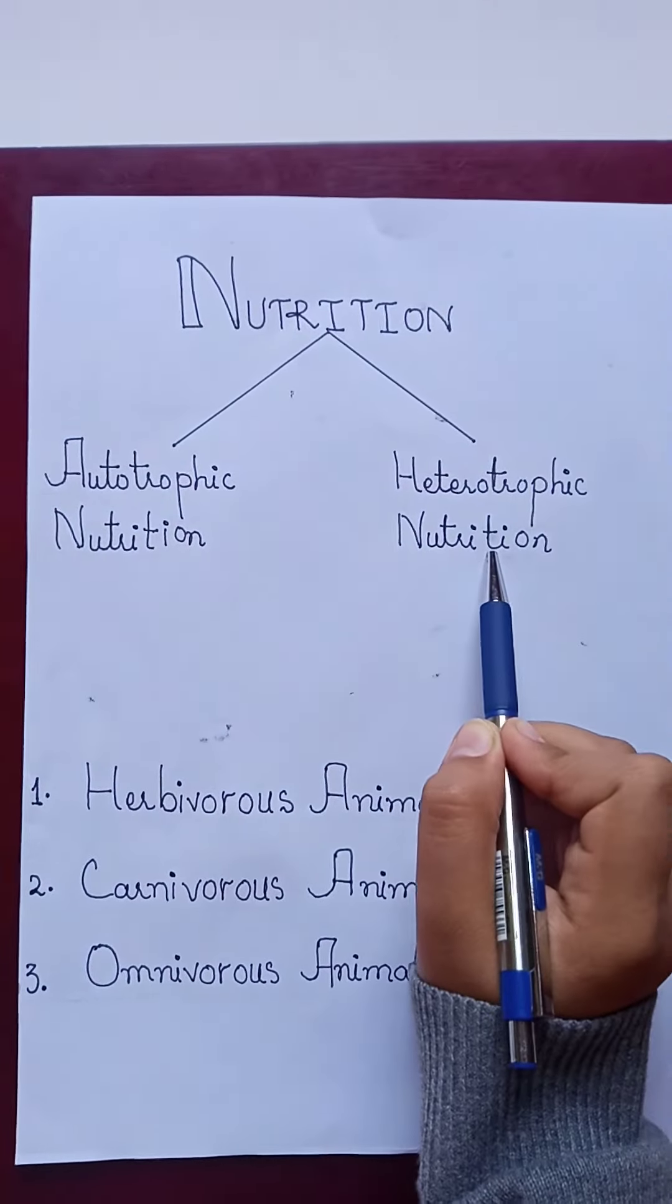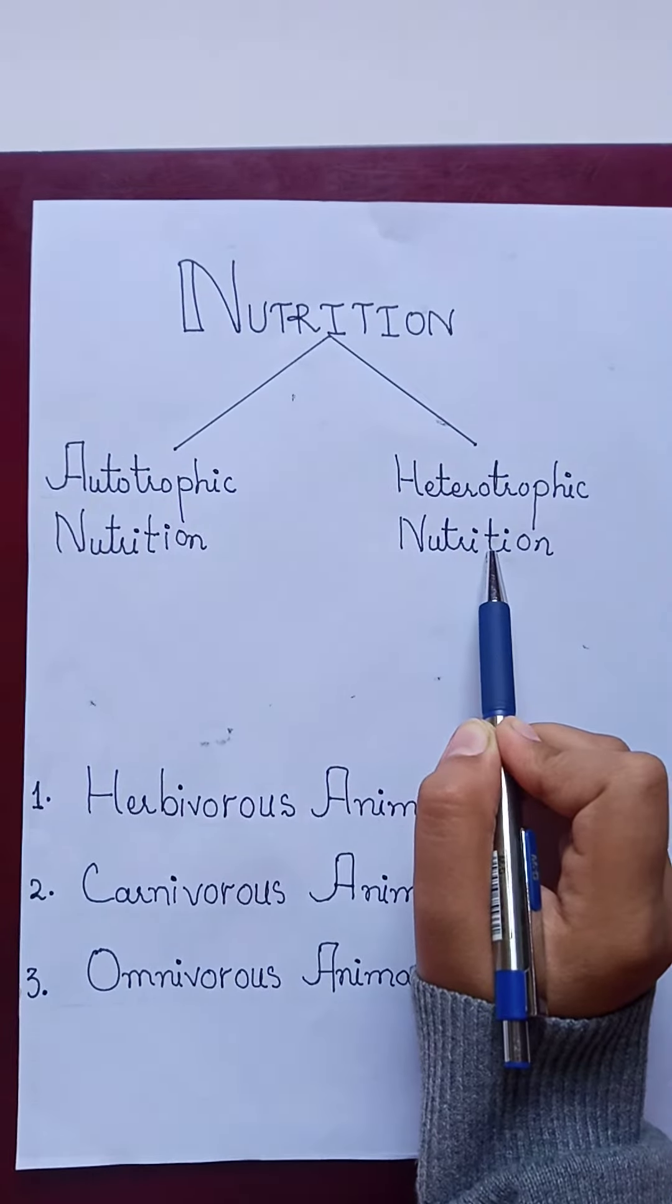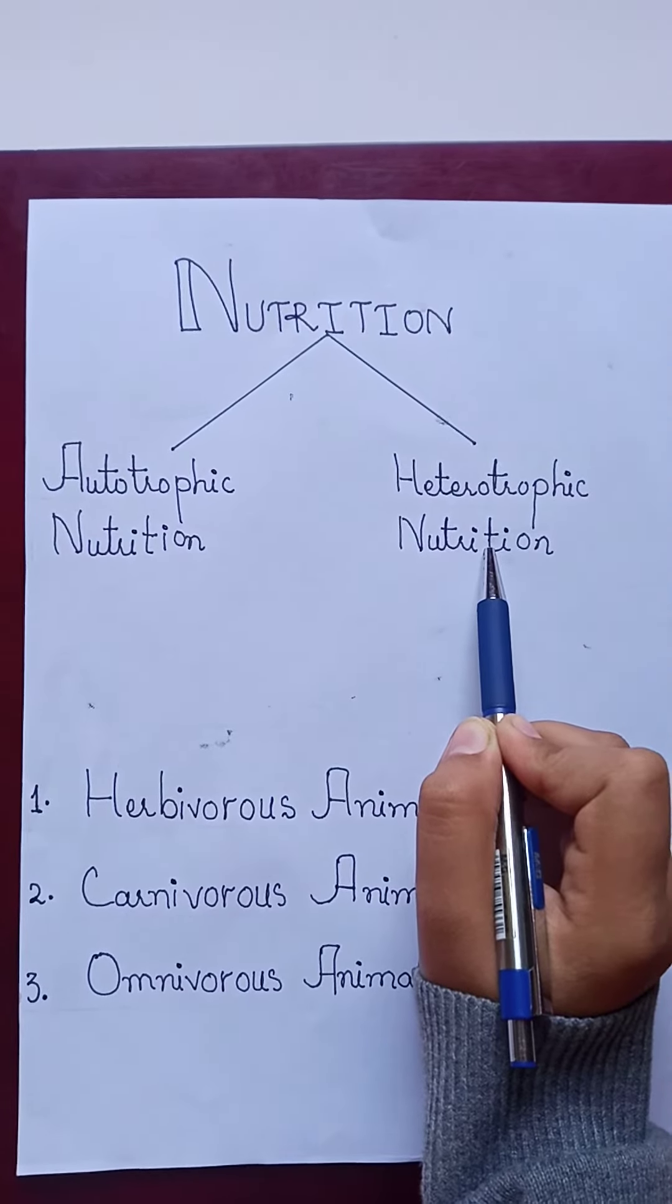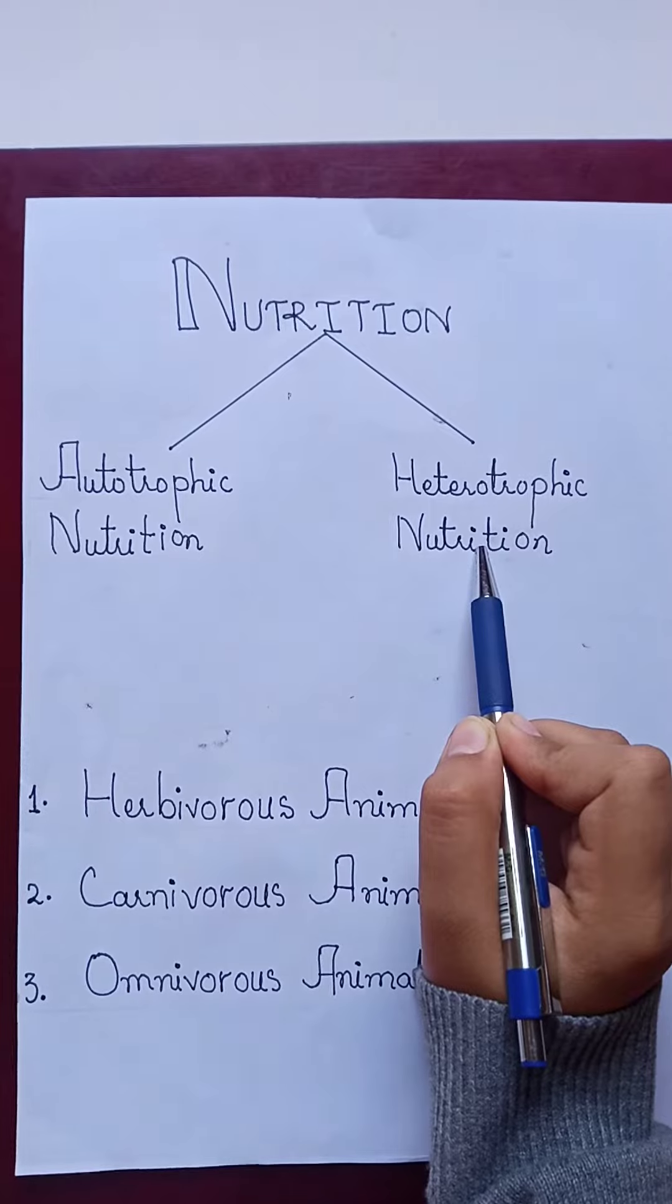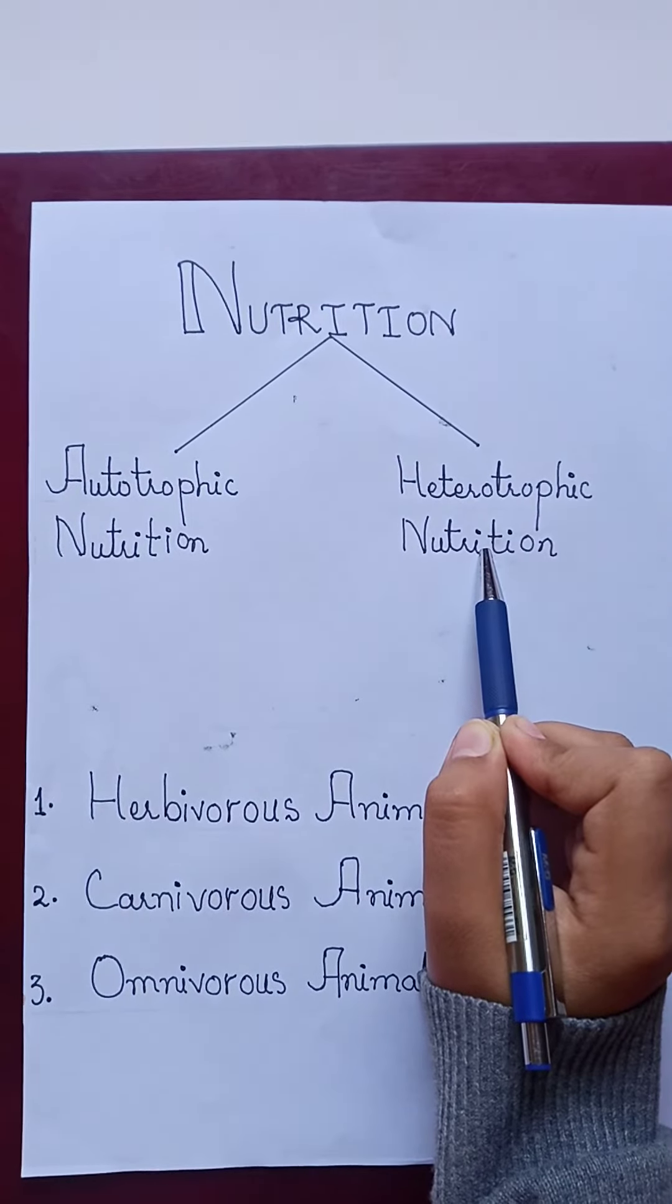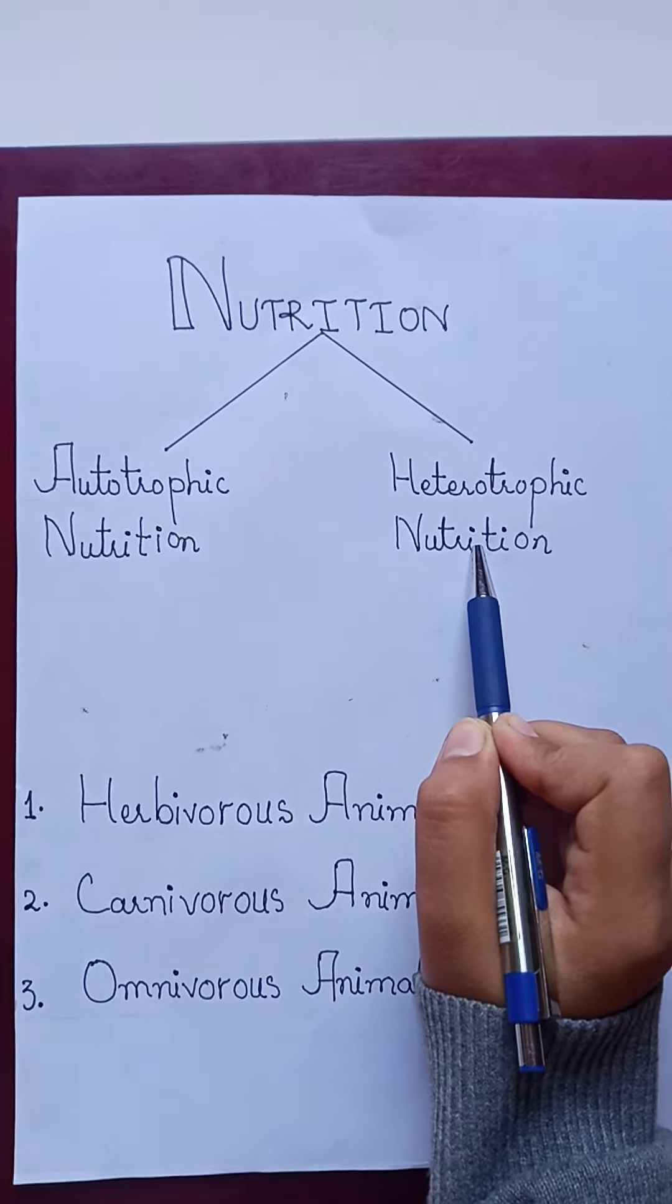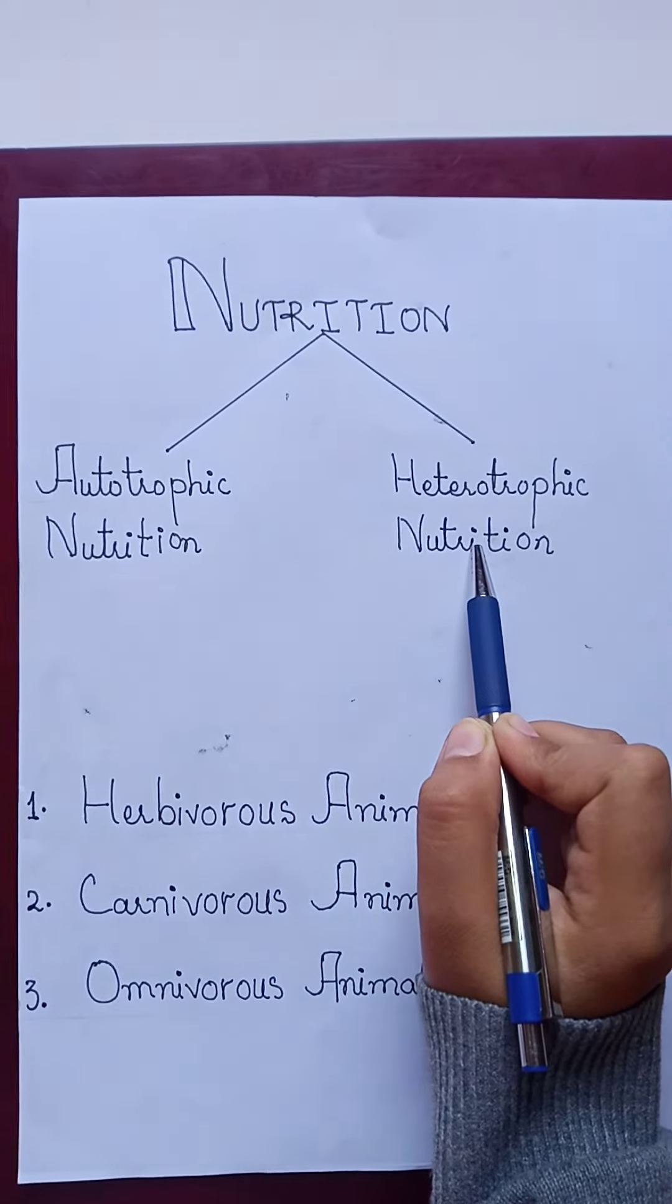Now, heterotrophic nutrition. All plants cannot prepare their own food. Non-green plants like fungi and animals cannot manufacture their own food. They depend upon green plants directly or indirectly for their food supply.